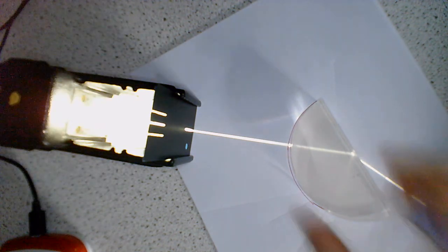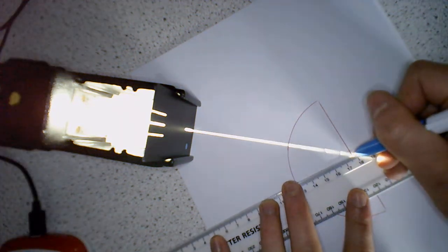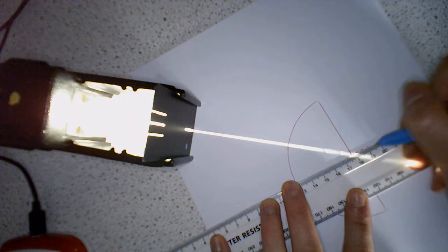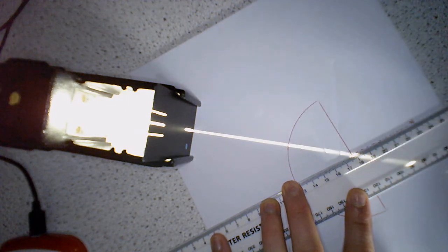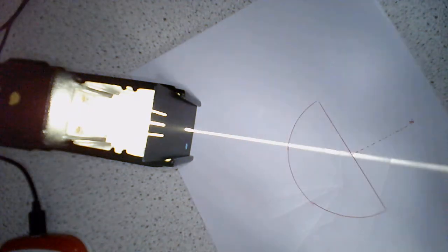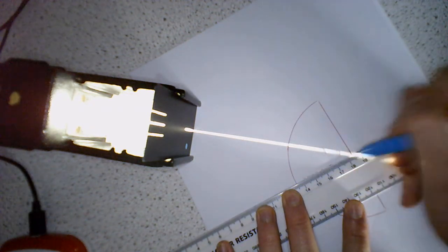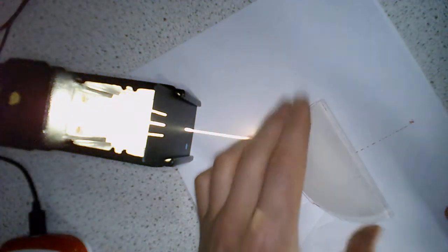So as with any optics experiment, what we need to do is draw ourselves a normal line. There we go, got ourselves a normal line there. And then we can put, and actually I was being a bit careless. I should make sure my normal line extends on both sides because I'm going to need to measure angles on both sides. Okay, so there we go.